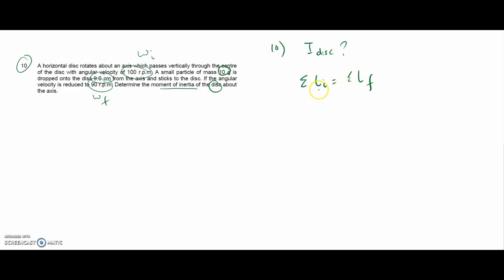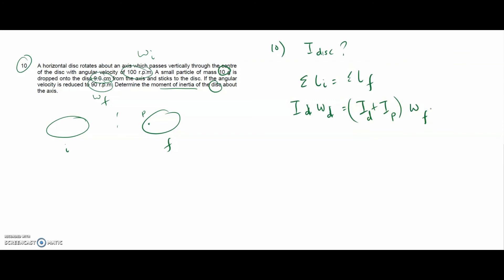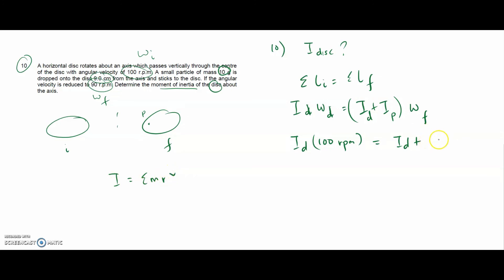Initially we only have the disc: I_disc × omega_initial. Finally we have the disc plus the particle moving at omega_final. The equation is: I_disc × 100 rpm = (I_disc + mr²) × 19 rpm. Since both sides have rpm, the units cancel. The particle's moment of inertia uses I = mr² with m = 10×10⁻³ kg and r = 9×10⁻² m.